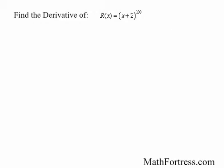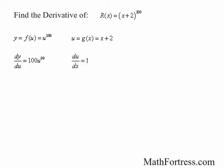Using Leibniz notation, we let y equal f of u, which equals u to the power of 100 — the outer function. The derivative dy over du is equal to 100 times u to the power of 99. Likewise, we let u equal g of x, which equals x plus 2, so du over dx equals 1. Using the chain rule in Leibniz notation, dy over dx equals dy over du times du over dx.